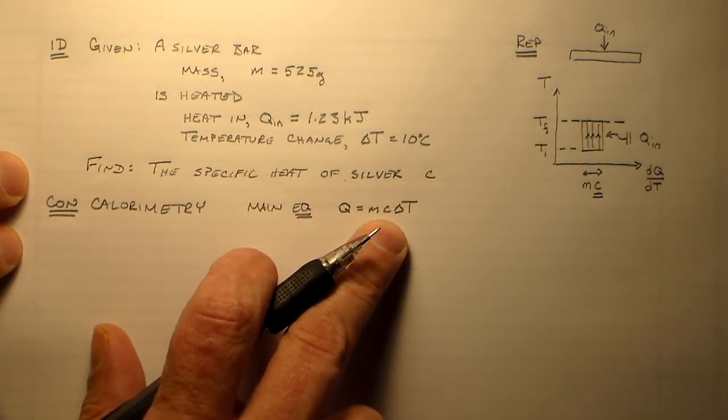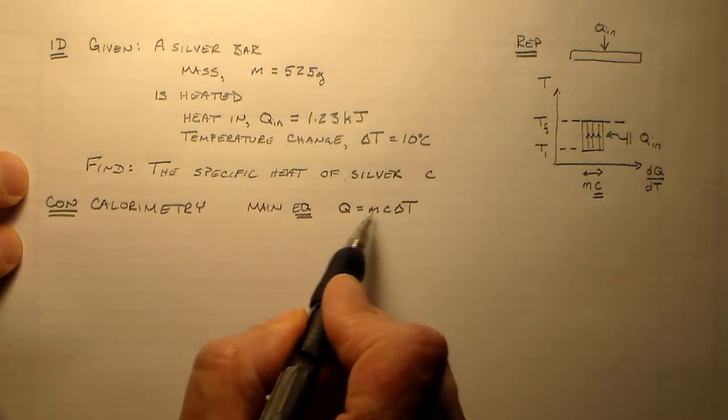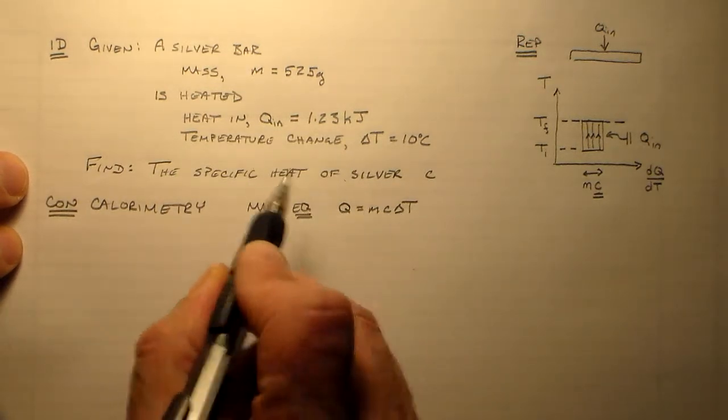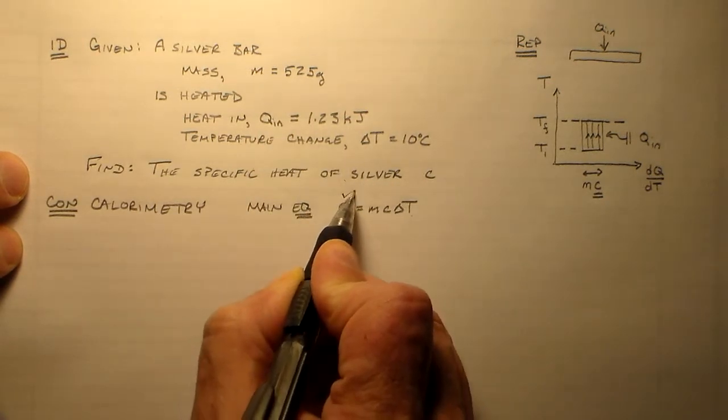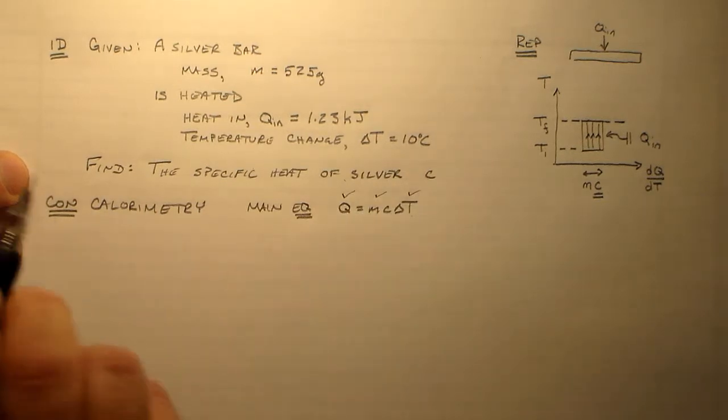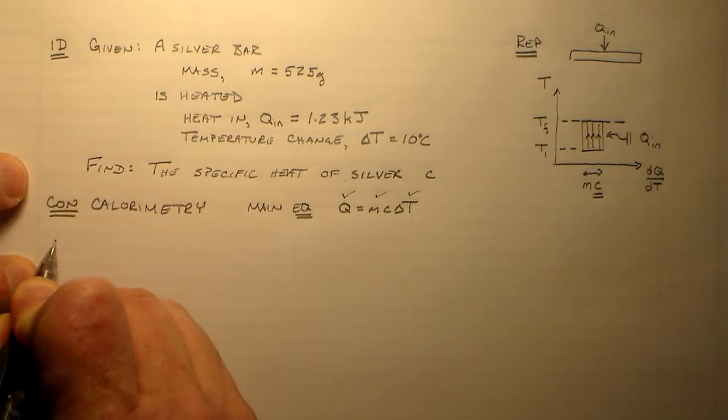So, basically, the best thing to do is isolate C. And then make sure that we have all of our other variables. Which we do. They're given in the problem statement. We have the Q. We have the M. We have the delta T. We don't really have a lot to worry about. We just go ahead and write down our answer.